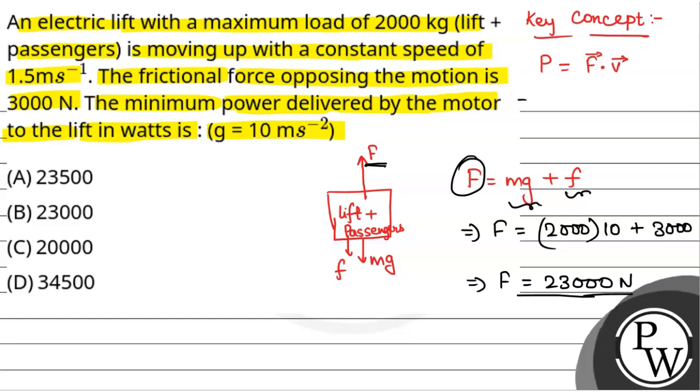Now we have to calculate minimum power, so minimum power will be equal to force, that is 23000, into velocity is given as 1.5 meter per second, so this will be equal to 34500 watt.